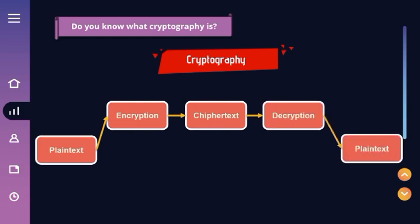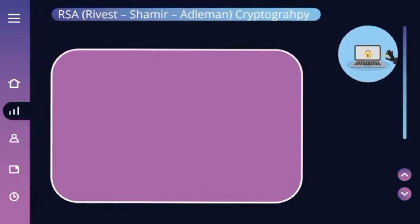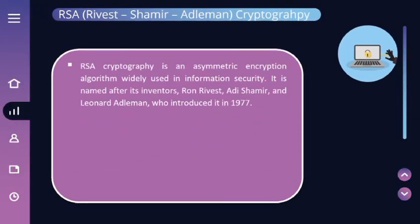One of the most important and widely used types of cryptography in digital communication security is RSA cryptography. RSA cryptography is an asymmetric encryption algorithm widely used in information security. It is named after its inventors — Ron Rivest, Adi Shamir, and Leonard Adleman — who introduced it in 1977.